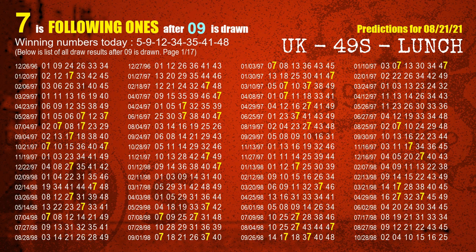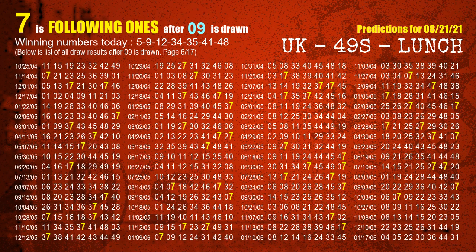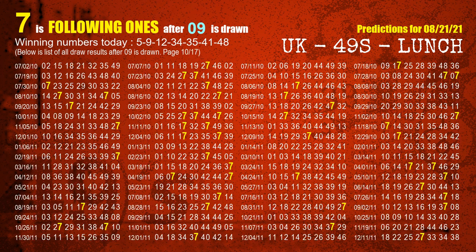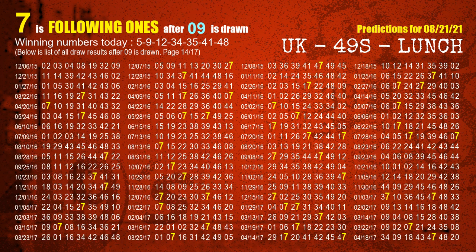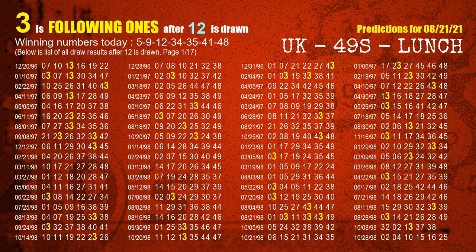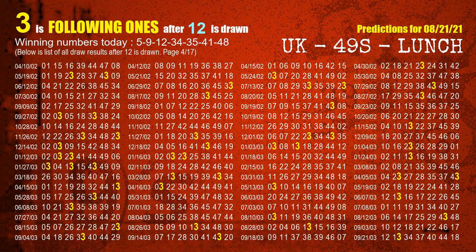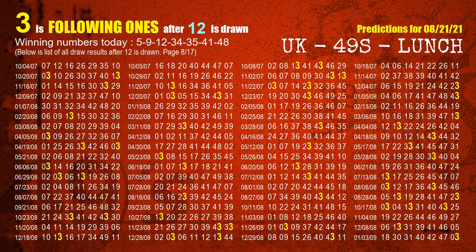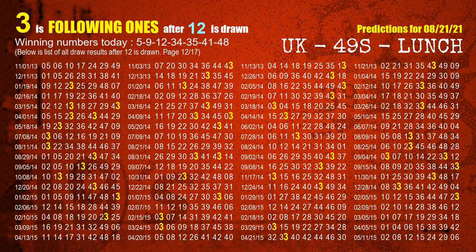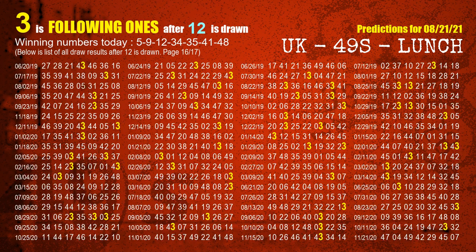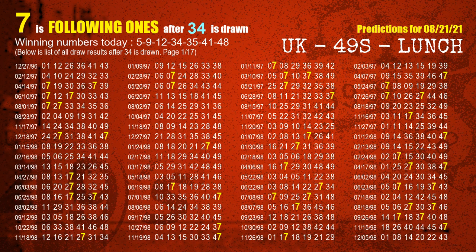The second winning number is 09 — the most frequently following units digit is 7 when 09 is the winning number in the last draw. The third winning number is 12 — the most frequently following units digit is 3 when 12 is the winning number in the last draw. The fourth winning number is 34 — the most frequently following units digit is 7 when 34 is the winning number in the last draw.